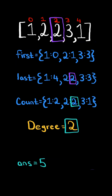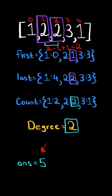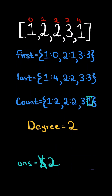We continue iterating through the count dictionary. The frequency is the same as the degree, so we get the index of its last occurrence and the index of its first occurrence. To get the length of the contiguous subarray of degree 2, we take its last occurrence minus its first occurrence plus 1. In this case, the length is 2 and it's smaller than our answer, so we update. We continue iterating — in this case, the frequency does not equal the degree, so we skip it. At the end, we return our answer.